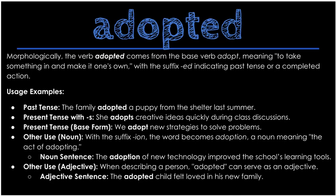Morphologically, the verb adopted comes from the base verb adopt, meaning to take something in and make it one's own, with the suffix -ed indicating past tense or a completed action. Past tense: the family adopted a puppy from the shelter last summer. Present tense: she adopts creative ideas quickly during class discussions. Base form: we adopt new strategies to solve problems. If you add -tion to the end, the word becomes adoption, a noun meaning the act of adopting — for example: the adoption of new technology improved the school's learning tools. As an adjective: the adopted child felt loved in his new family.